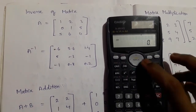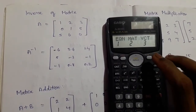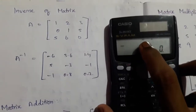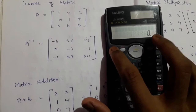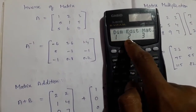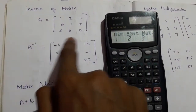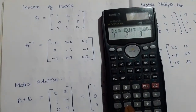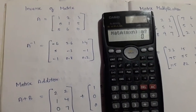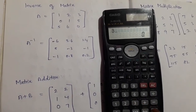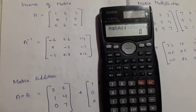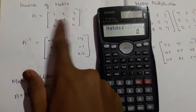First we want to click the mode option 3 times and then go to matrix mode. Now the calculator is set to matrix mode. Then press Shift and press number 4. It will show dimensions, edit, and matrix. First we want to set the dimensions — that is 3 rows and 3 columns. Press 1, then press A. The dimensions are set to a 3 by 3 matrix, 3 rows, 3 columns. Now we want to input the numbers.